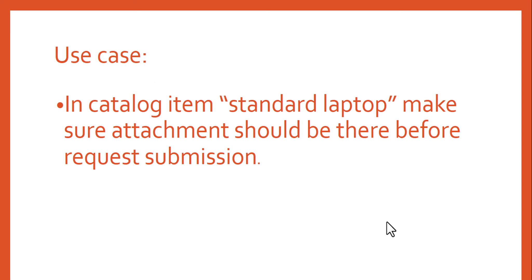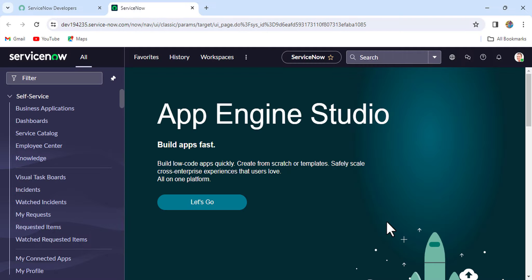Today's use case: in the catalog item 'Standard Laptop', make sure an attachment should be there before catalog request submission. Whenever a user submits the Standard Laptop catalog item request, we have to make sure that an attachment is present. Let's go to the instance and try to implement it.